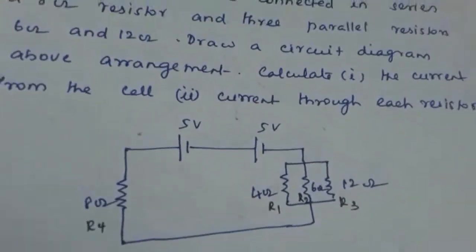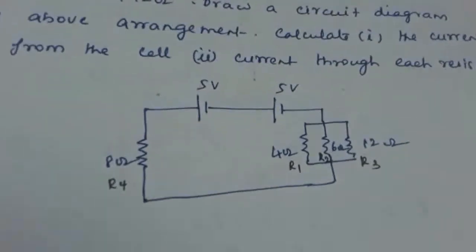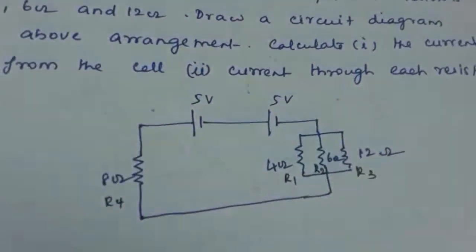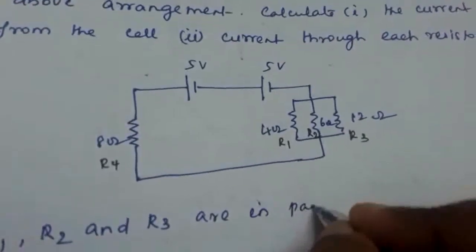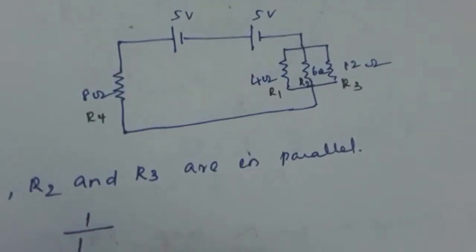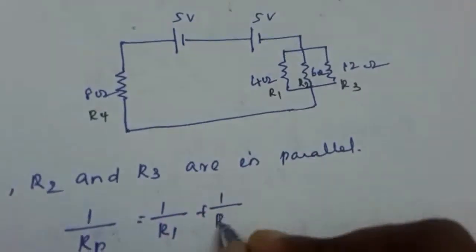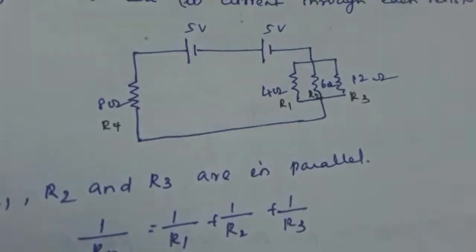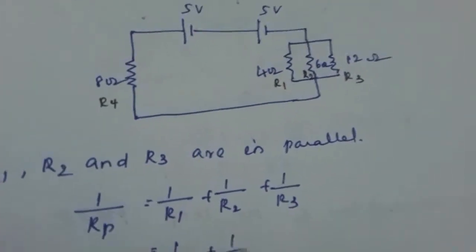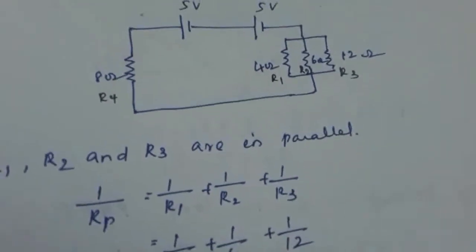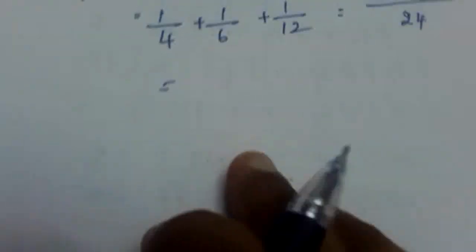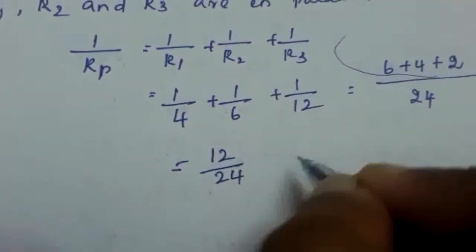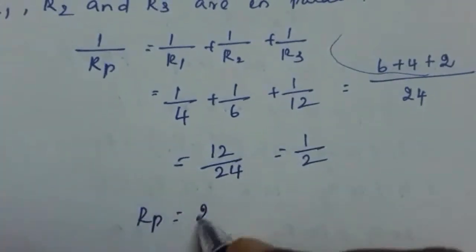Now we find the equivalent resistance. R1, R2, and R3 are in parallel, so 1/Rp = 1/R1 + 1/R2 + 1/R3. This gives us 1/4 + 1/6 + 1/12. The LCM is 24, so this becomes 6 + 4 + 2 over 24, which equals 12/24 = 1/2. Therefore Rp equals 2 ohm.